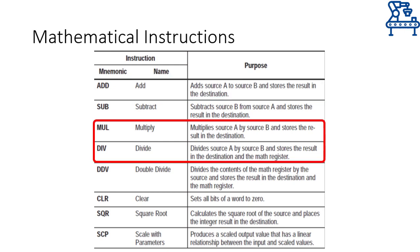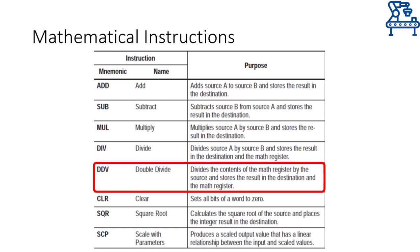Moving on, the multiply and divide instructions will also work in the same fashion. However, their results are stored in the destination as well as the math register. The double divide instruction is used after the divide instruction if you want to divide something twice. The first division is achieved by the divide instruction, whose quotient is stored in the math register without any rounding. The second division is achieved by the double divide instruction, which divides the contents of the math register by the given divisor. In the divide instruction, the quotient stored in the destination address is rounded to an integer value, whereas the unrounded quotient is available in the math register. Therefore, achieving double division requires the unrounded quotient from the math register.